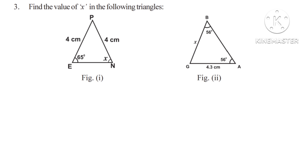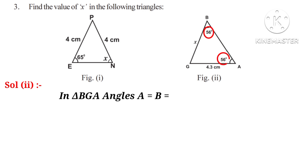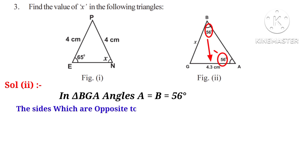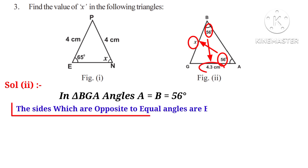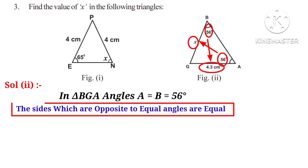Now let us see the second figure. Solution 2: in triangle BGA, observe that angle A and angle B are both equal to 56 degrees. The sides which are opposite to equal angles are also equal. So the side BG is equal to X, which is equal to 4.3 cm.